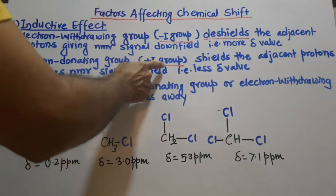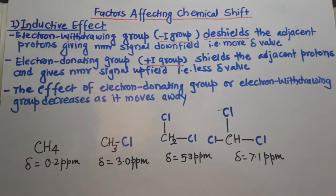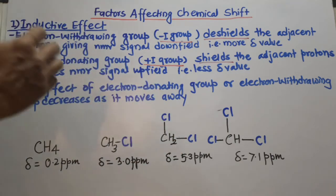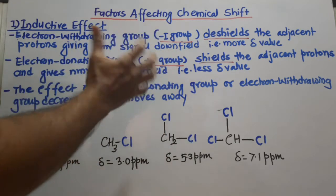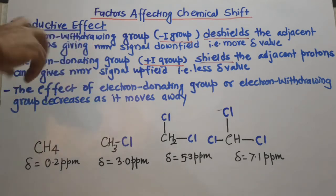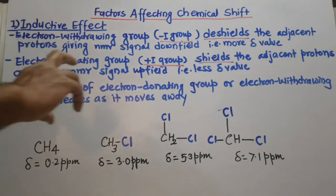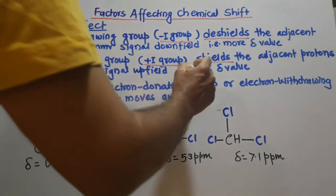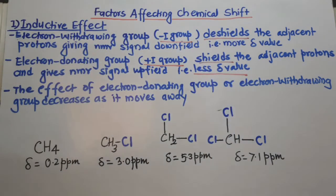Opposite to this, an electron-donating group — also called a plus-I group — shields the adjacent proton. The protons on the carbon where that group is attached are actually shielded from the external magnetic field because electron density is moving from that group toward the proton. Shielded means they are less exposed to the external magnetic field. To bring that proton into resonance, we need to increase the applied magnetic field B0, and when the signal moves toward TMS, the delta value is less.